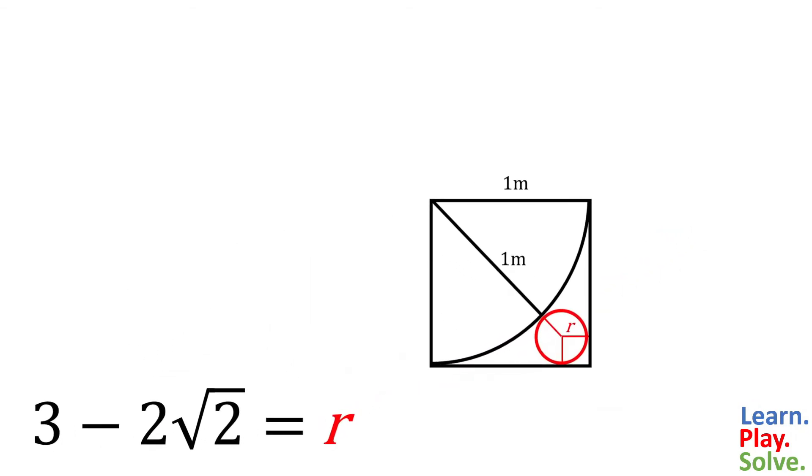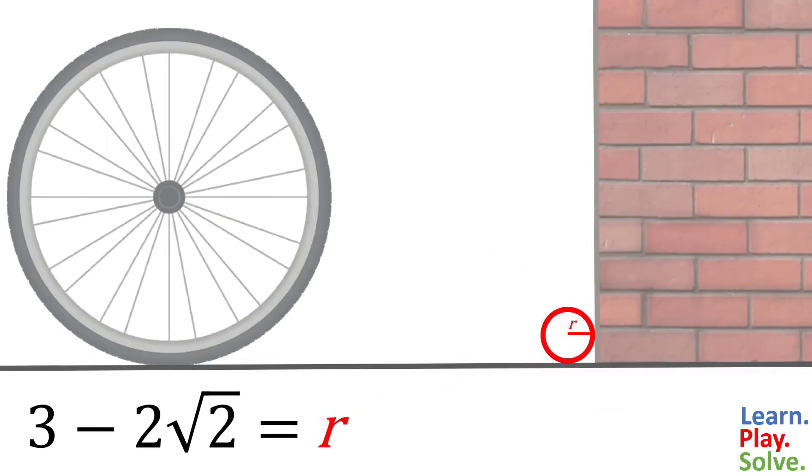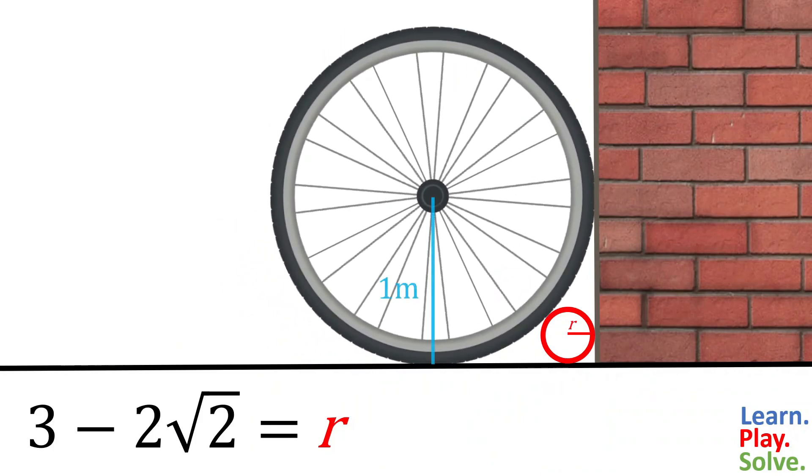This is the exact radius of the largest wheel that'll fit between a wall and a tire with a 1 meter radius. It comes out to approximately 0.172 meters.